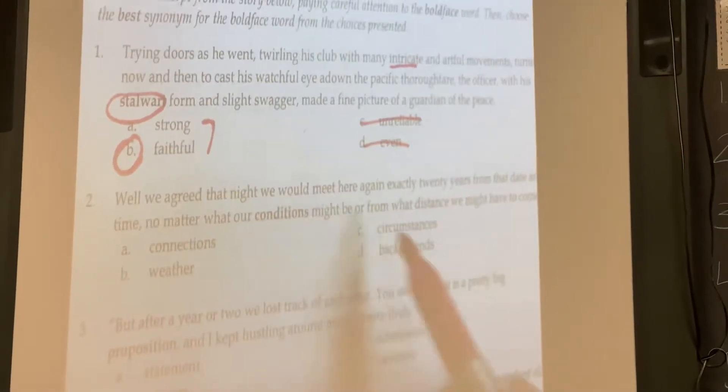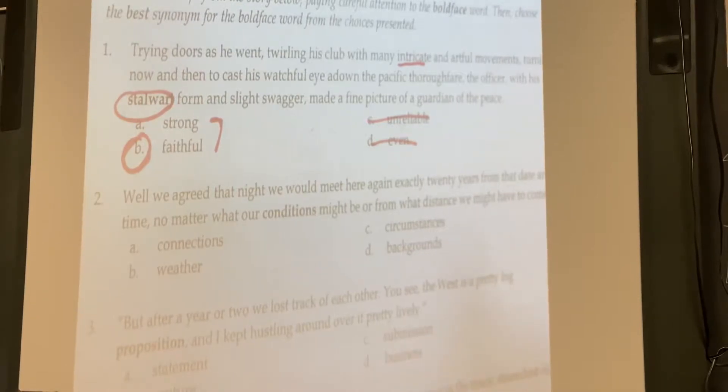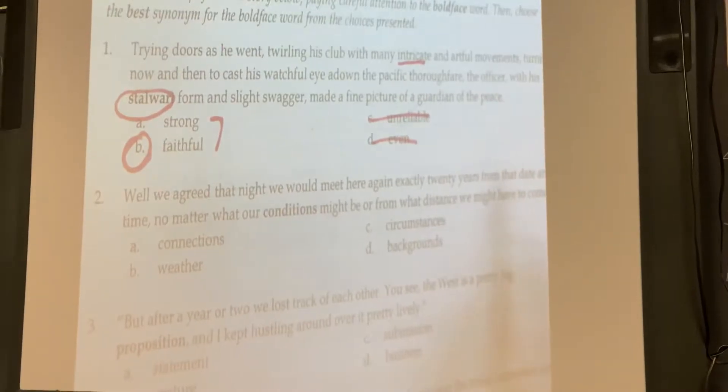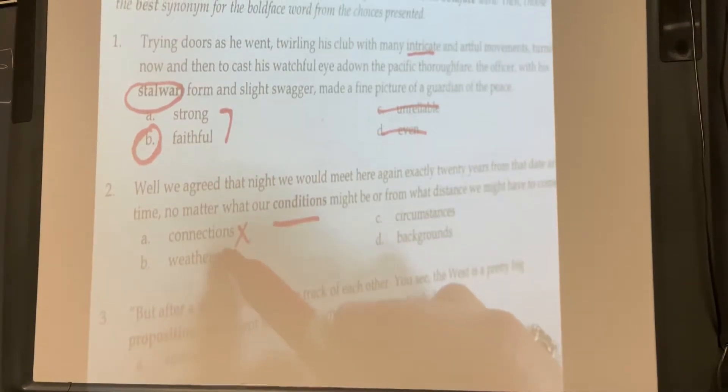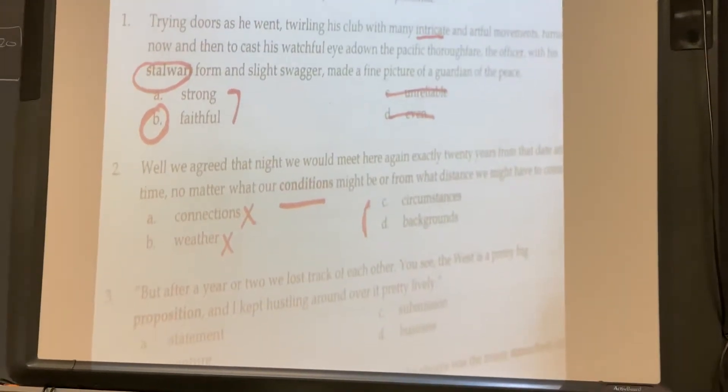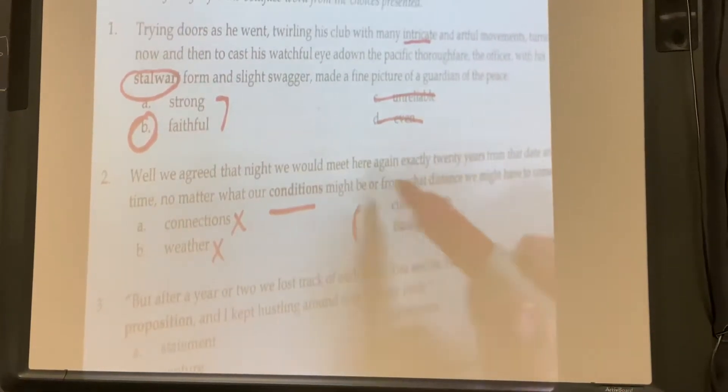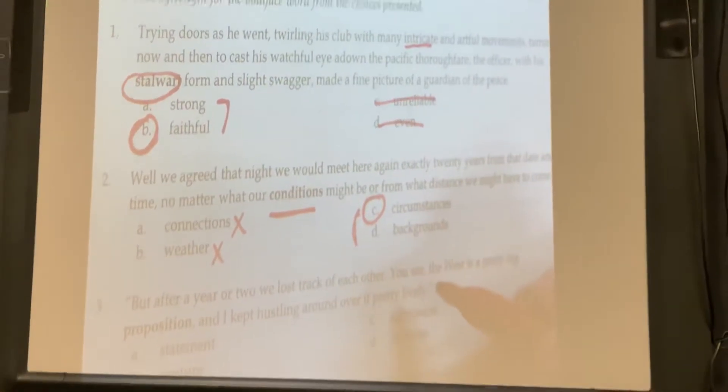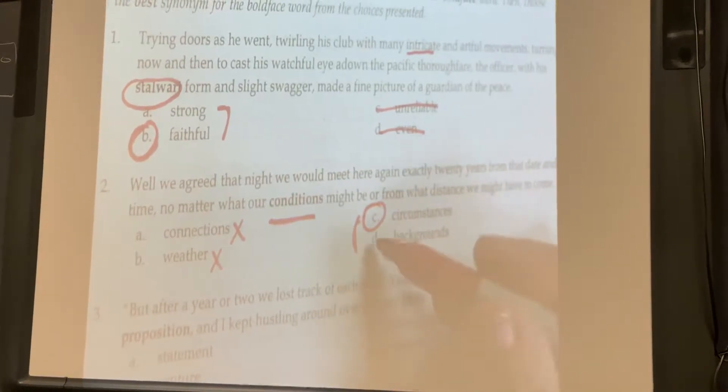Two: Well, we agreed that night we would meet here again exactly twenty years from that date and time, no matter what our conditions might be or from what distance we might have to come. So conditions here I believe does not mean connections, does not mean weather conditions. I'm kind of torn between backgrounds or circumstances. And just going by what the meaning of the sentence, I'm going to go with circumstances. Because background isn't something you can really control, it's kind of in the past, but circumstances would fit better. So I'm going to pick C for two.